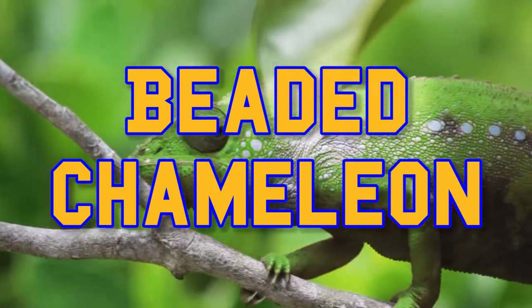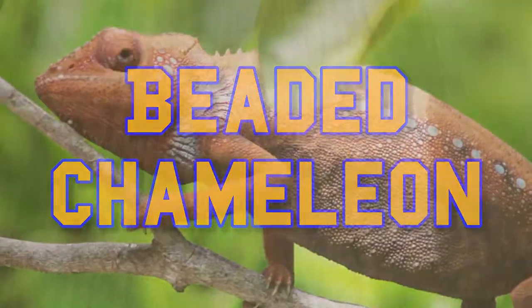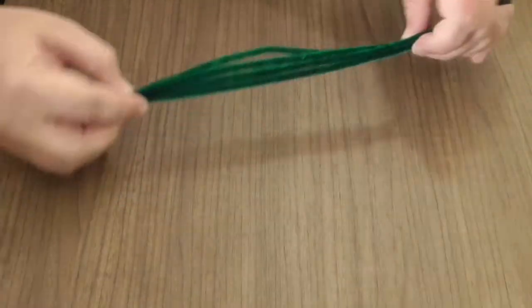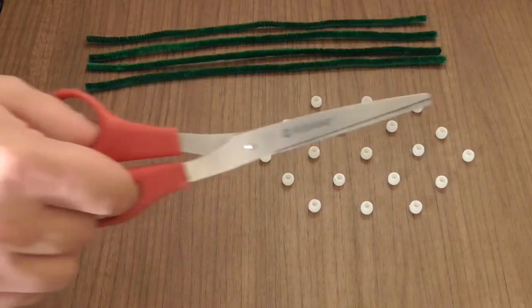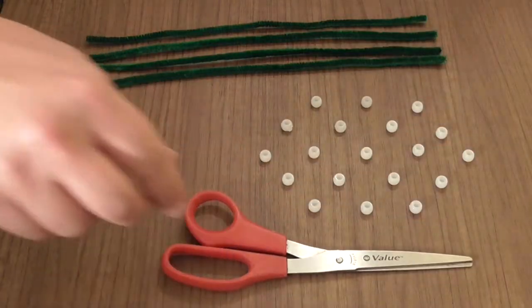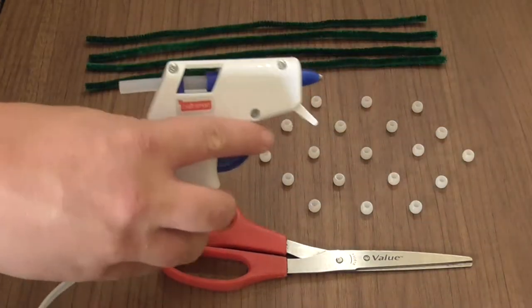To build your beaded chameleon, you'll need a few materials. Start with four green pipe cleaners, about 20 perler beads. To put it all together, you're going to need a pair of scissors and a hot glue gun. Be careful!